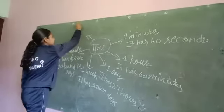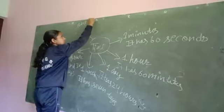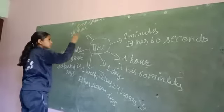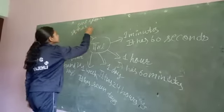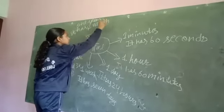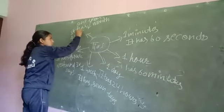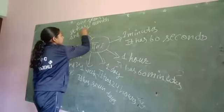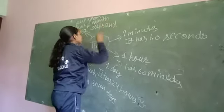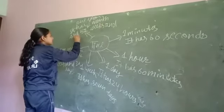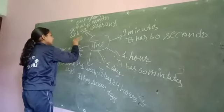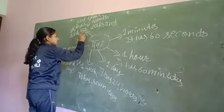Next is one year. It has 12 months and 52 weeks and 365 days.